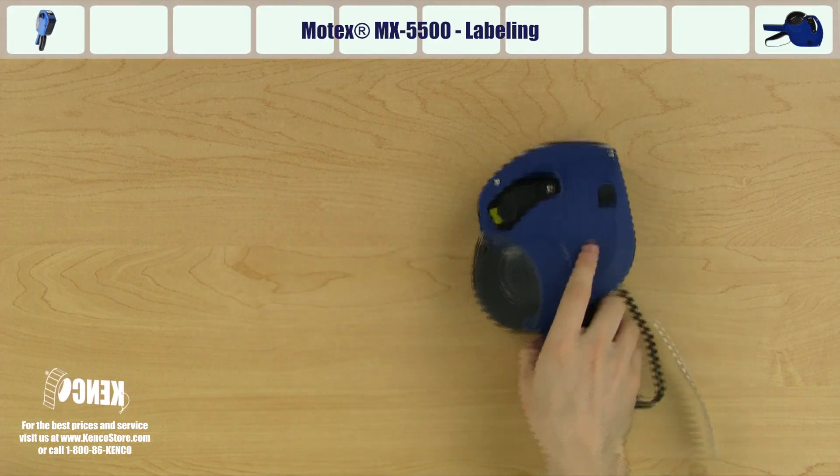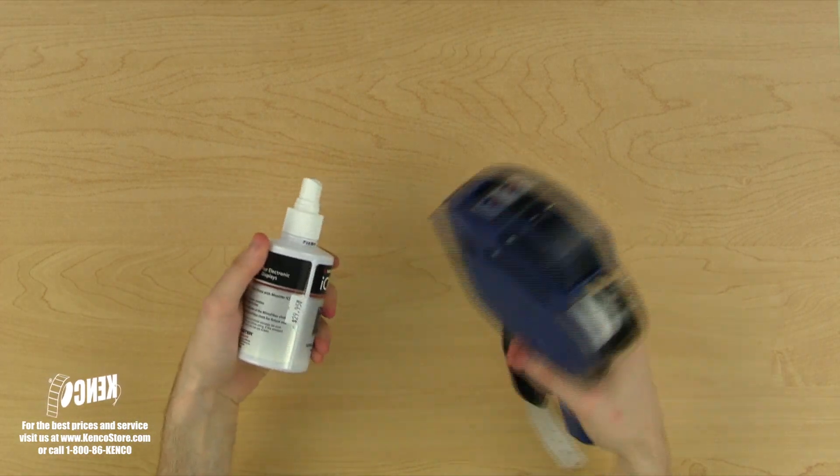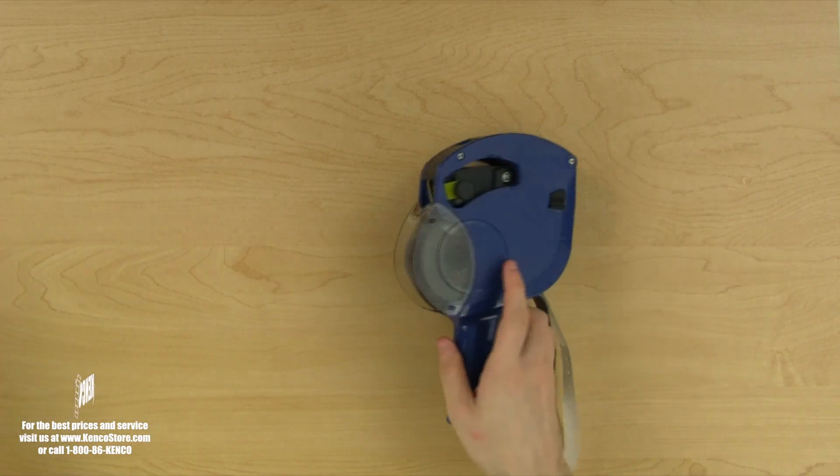To label an item, simply pick up the gun, squeeze and release the trigger once, hold the price gun directly over the product, then just roll the label on your product and you're all done.